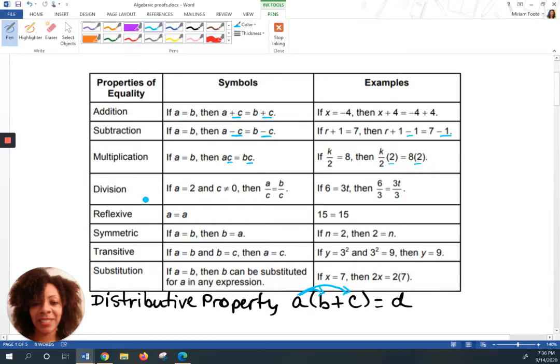Division. A is equal to B this time. Well, C cannot equal 0. That means the denominator, you cannot have a 0 in the denominator, or it is undefined. So A over C is equal to B over C. So they're dividing both sides by C. C cannot equal 0. That's what the little slash means when it's in the equal sign. If I'm looking at it in terms of an equation, 6 equals 3T, if I'm trying to get T by itself, I would divide both sides by that 3.